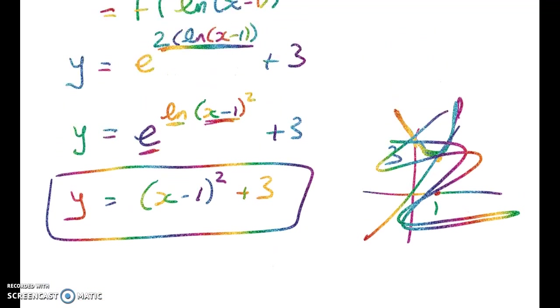...that's going to make this negative. Okay, so the domain here is x greater than 1. It has to be strictly greater because the natural log of 0 is not defined.